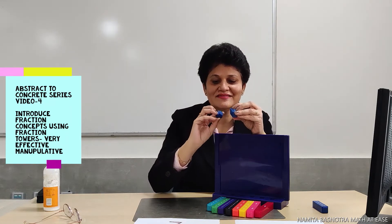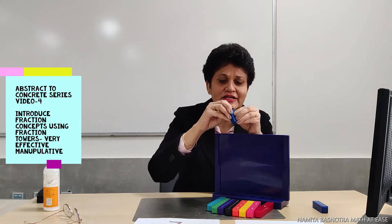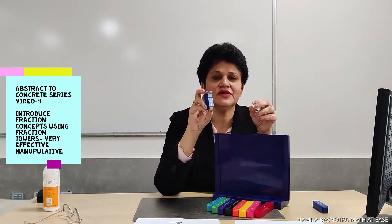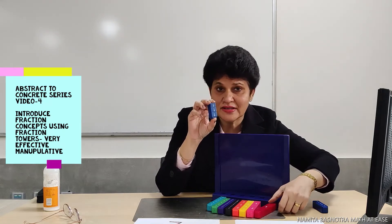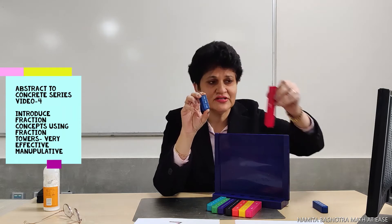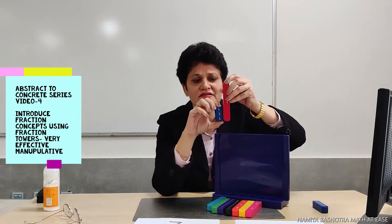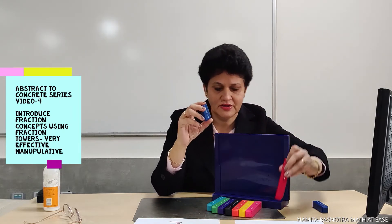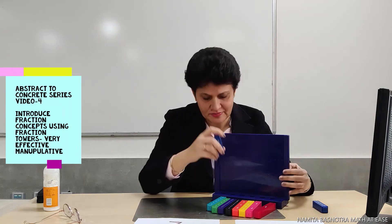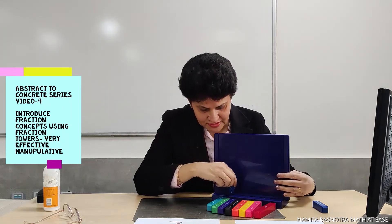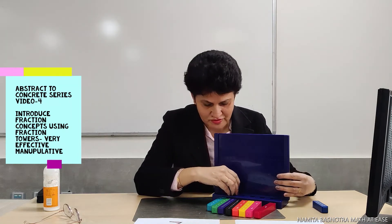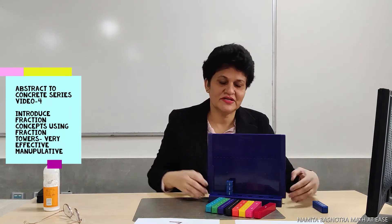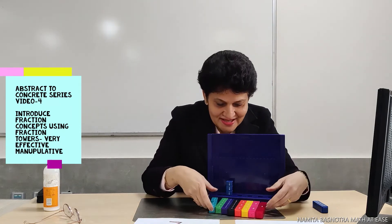The child places each piece and can now actually view how much three by eight is. The teacher establishes at the beginning of the class that this is one whole, and this is three by eight — that reference is important. The child then places one by eight pieces to form three by eight.